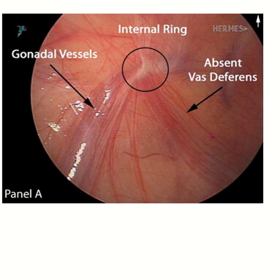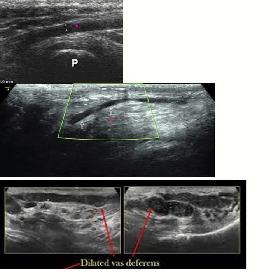Another clinical condition related to the vas deferens is congenital absence of the vas deferens, which causes azoospermia and is sometimes associated with cystic fibrosis. Sonographically, the normal diameter of the vas deferens can be visualized. Obstruction or narrowing of the vas deferens, as well as dilatation, can occur due to vasectomy, infection, surgical trauma, or inflammatory conditions like chronic prostatitis, and can cause infertility, epididymitis, or orchitis.